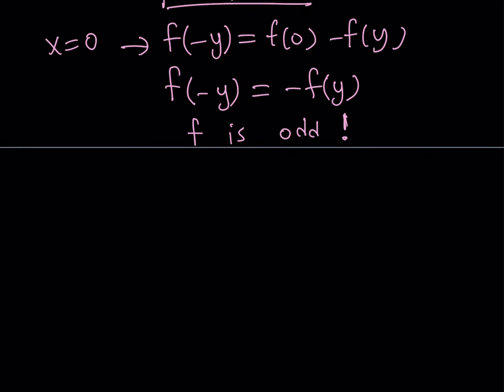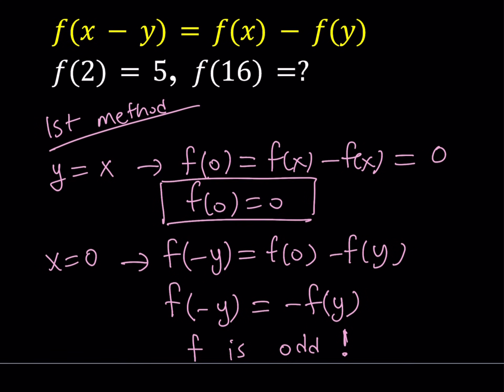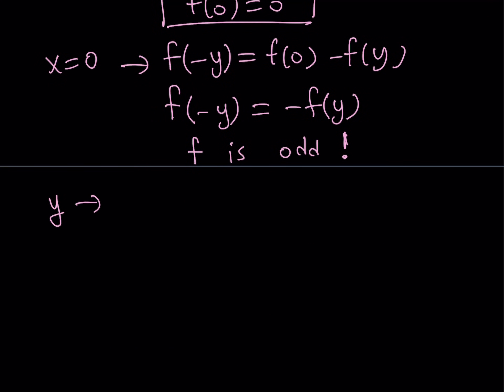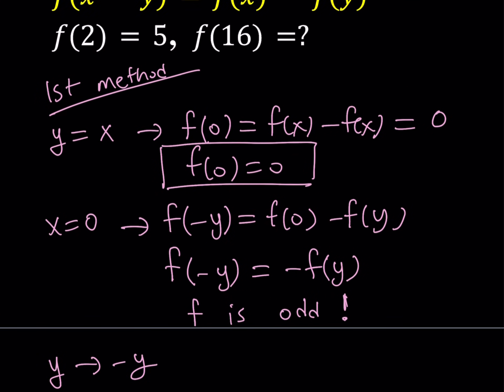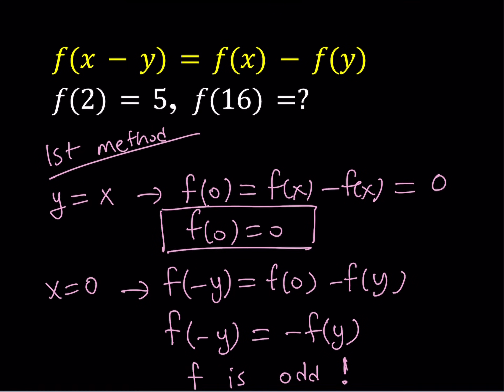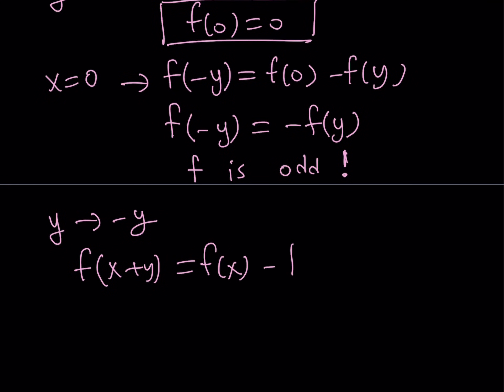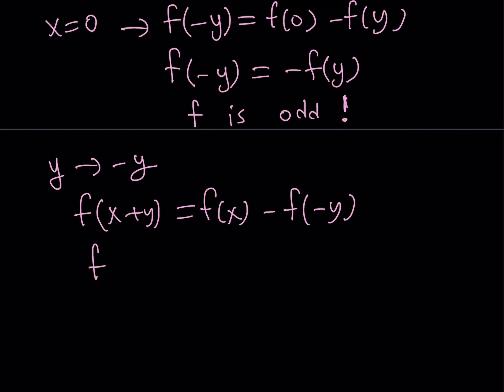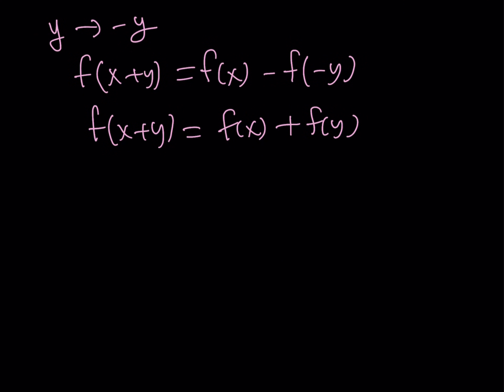So now, what am I going to do next? I know that f is odd and f(0) = 0, but I do need more information. Let's go ahead and replace y with -y now. If you replace y with -y, you're going to get f(x - (-y)), which is f(x+y). And that is going to give me f(x) - f(-y). But remember, f is an odd function, so f(-y) is the opposite of f(y). So this is going to give you f(x+y) = f(x) + f(y). And this is the well-known Cauchy equation.